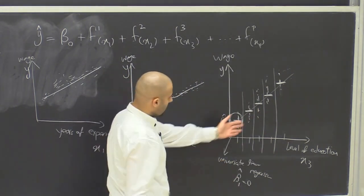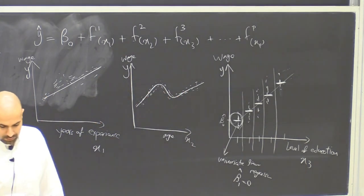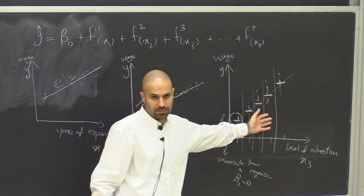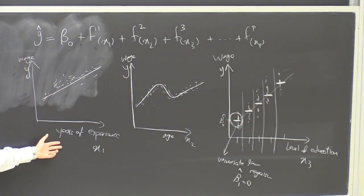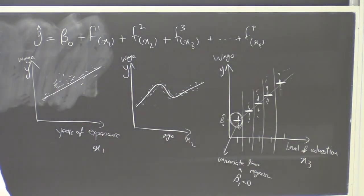And then here, you can see that there are averages of wage for different levels of education. So the wage of one person is a result of this prediction plus this prediction plus this prediction. It's a result of their years of experience and age and level of education. So this is generalized additive model.